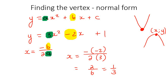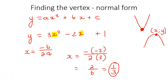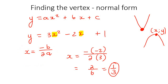How do we find the y value? To find the y value, it's really easy — you just take that x value and plug it back into the equation. Please make sure you've written the formula minus b over 2a down, because that is the most important formula. That is how you find the x value of the vertex.